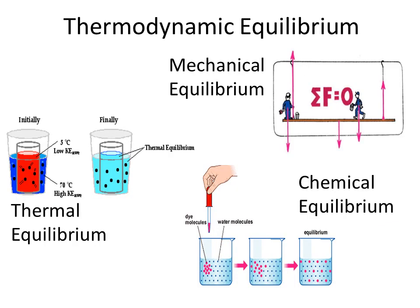A system is said to be in thermodynamic equilibrium when it is simultaneously in thermal equilibrium, mechanical equilibrium, and chemical equilibrium. Thermal equilibrium means the temperature remains constant. Mechanical equilibrium means pressure remains constant or the net forces acting on the system equal zero. Chemical equilibrium means the chemical composition remains constant or there is no chemical reaction occurring.